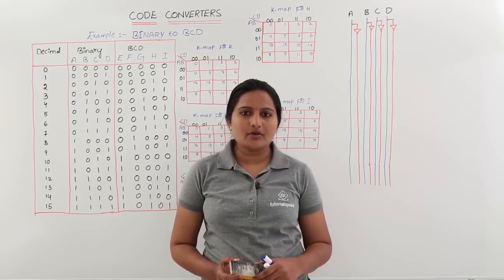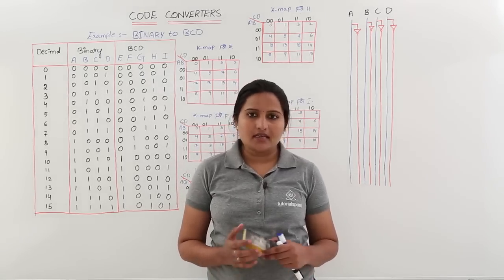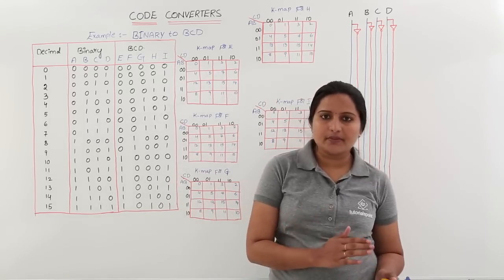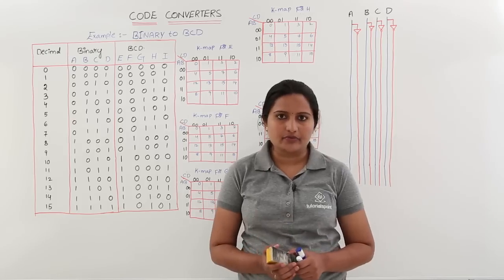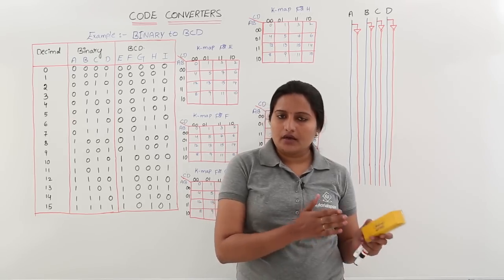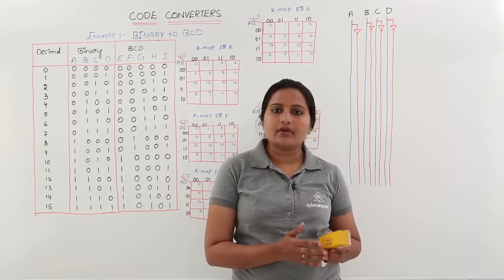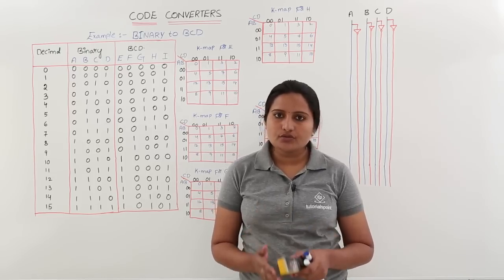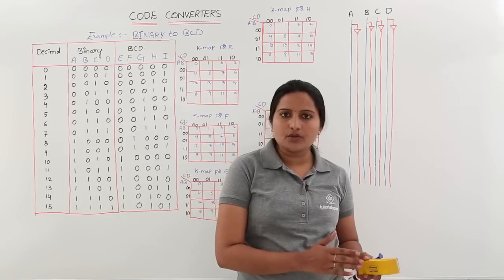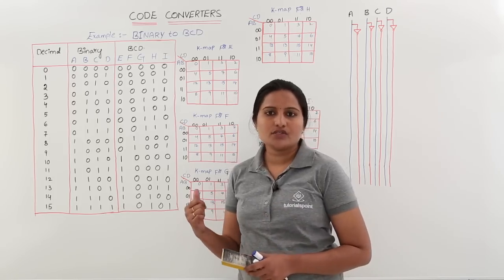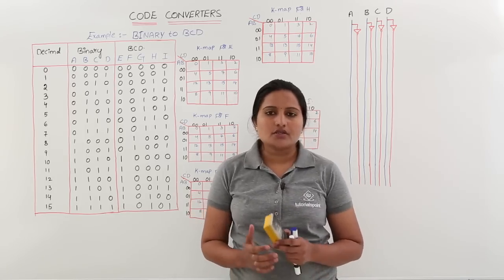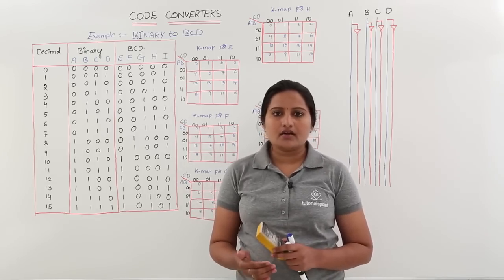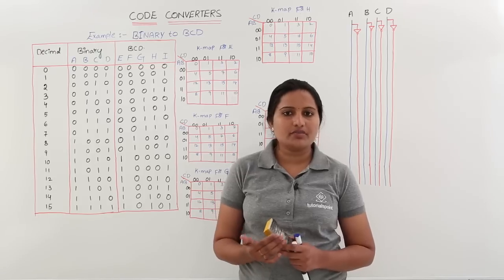In this class we are going to discuss about code converters. As the name indicates, these code converters are used to convert one type of code to another type of code. We have so many codes like binary code, BCD code, and grey code. To take conversion from one code to another code we make use of code converters. As an example of this code converter design, we are using a binary to BCD converter.